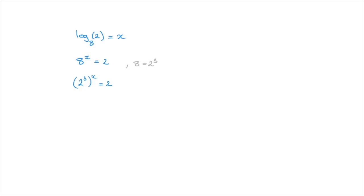And these powers on the left-hand side multiply together to leave us with 2 to the power of 3x equals to 2. And this 2 on the right-hand side — that's 2 to the power of 1. Now that both sides of the equation are written as powers of the same number, we can get rid of the bases altogether and equate the exponents. That would be 3x equals to 1.